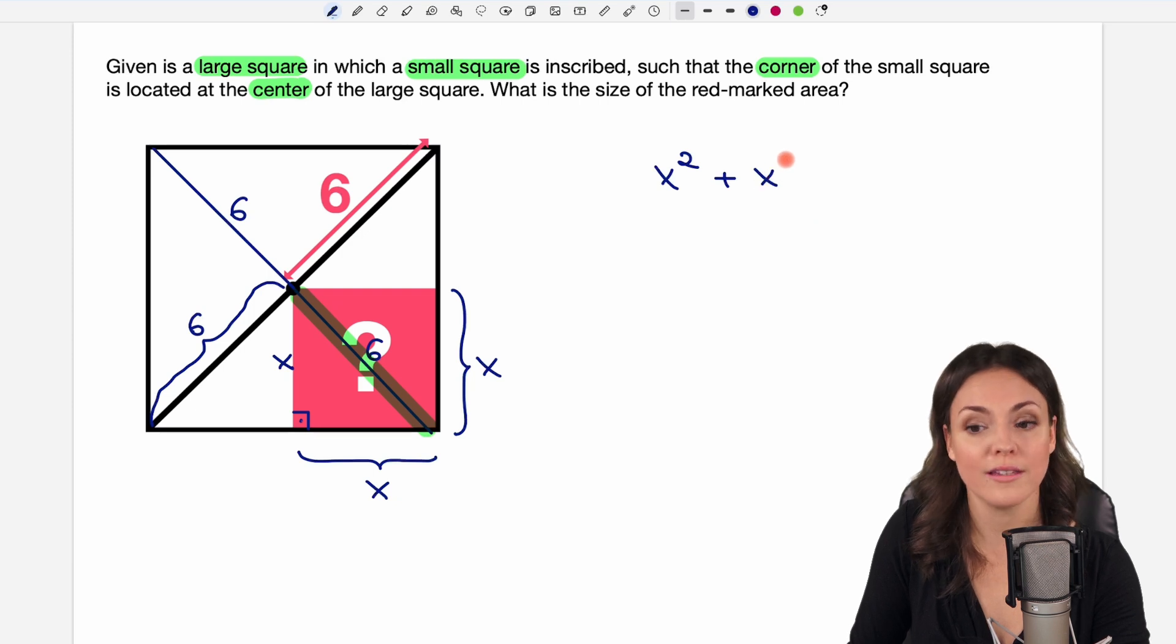So the length of the other side is x and square this as well and that equals and now take the hypotenuse it is of length 6 and square this as well.